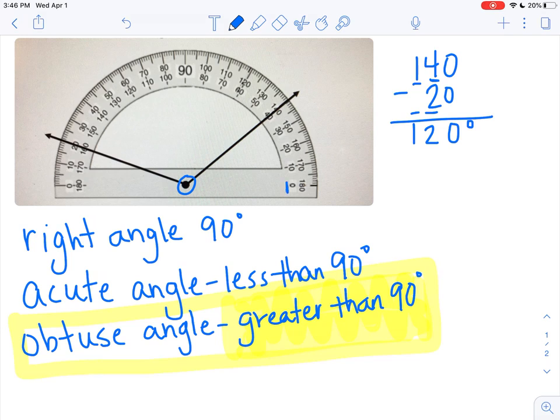So, here's our zero on the inner scale. We're going to count over, and we see it crosses over 40 degrees.